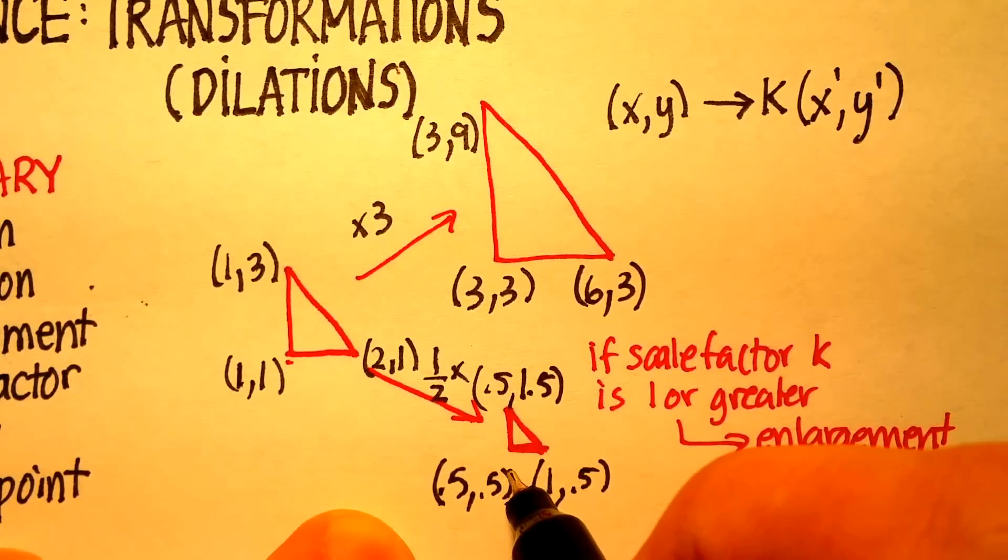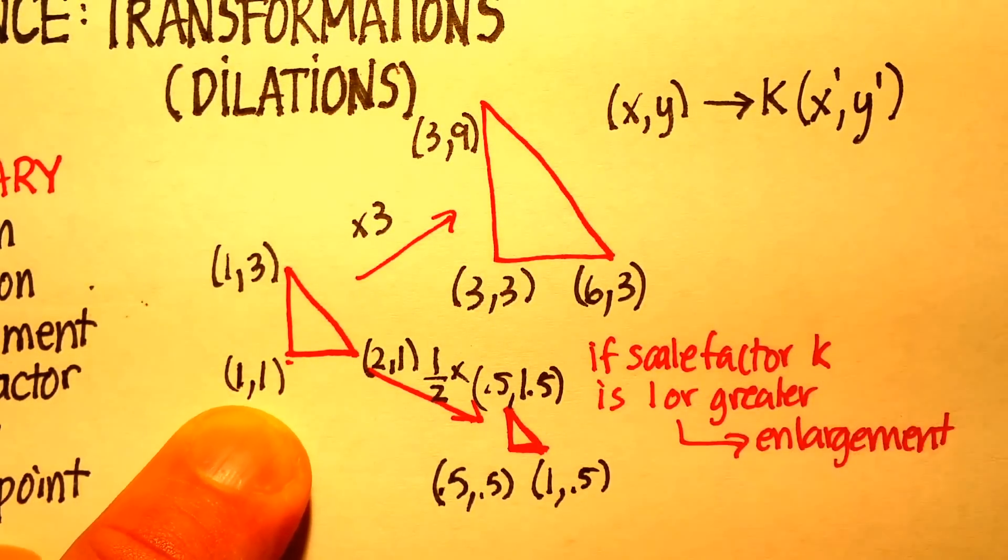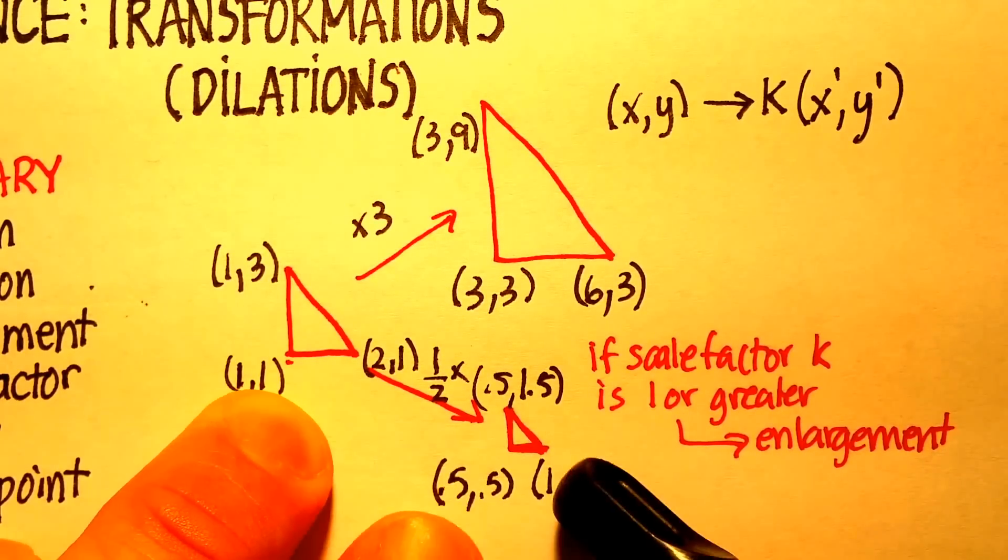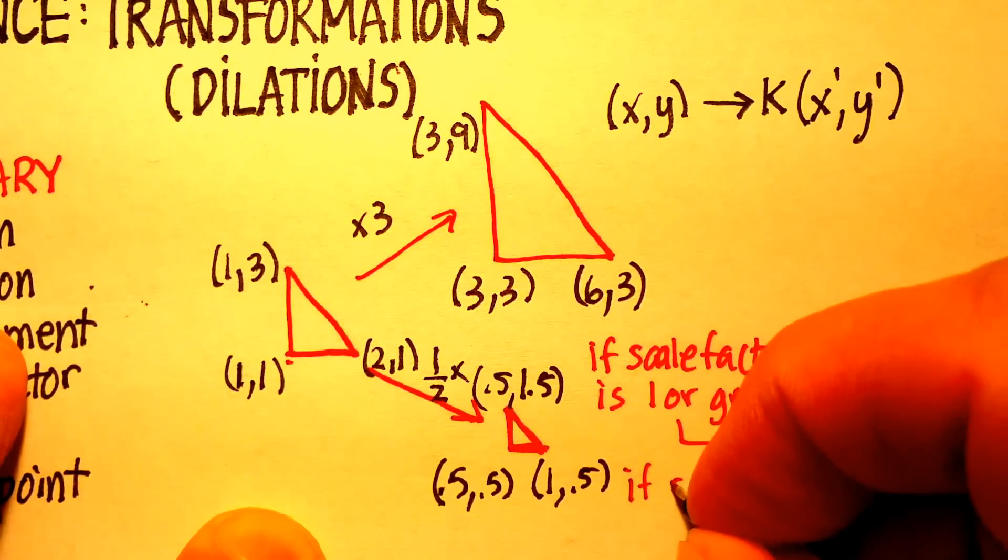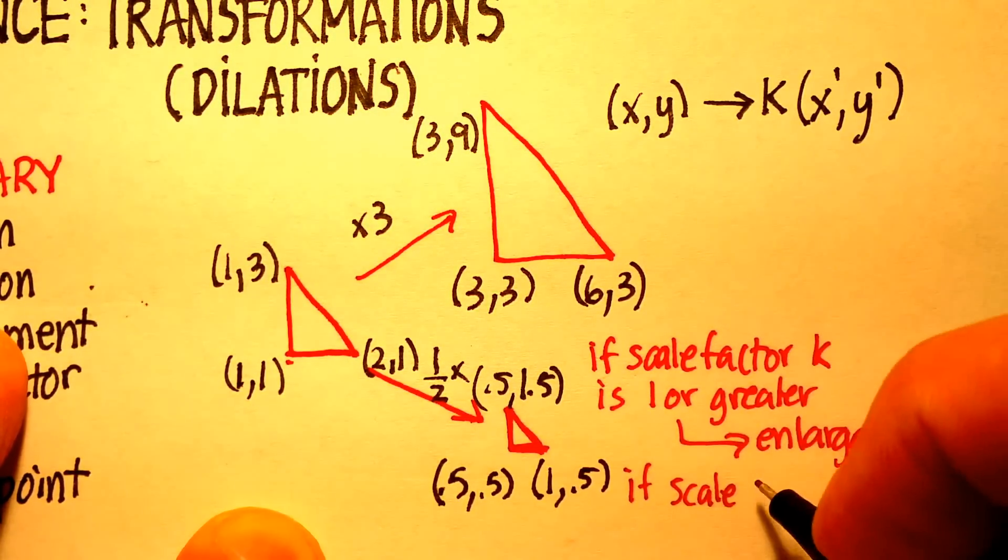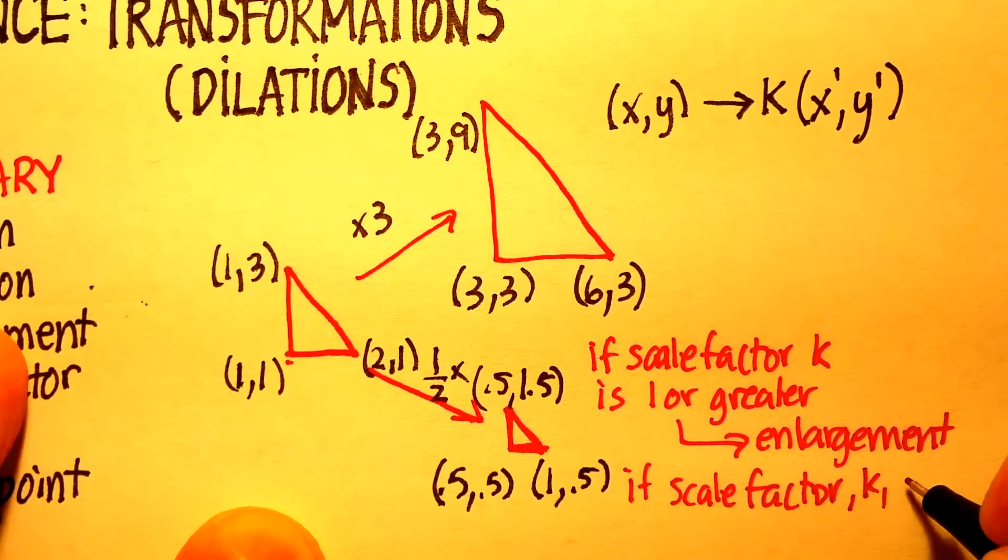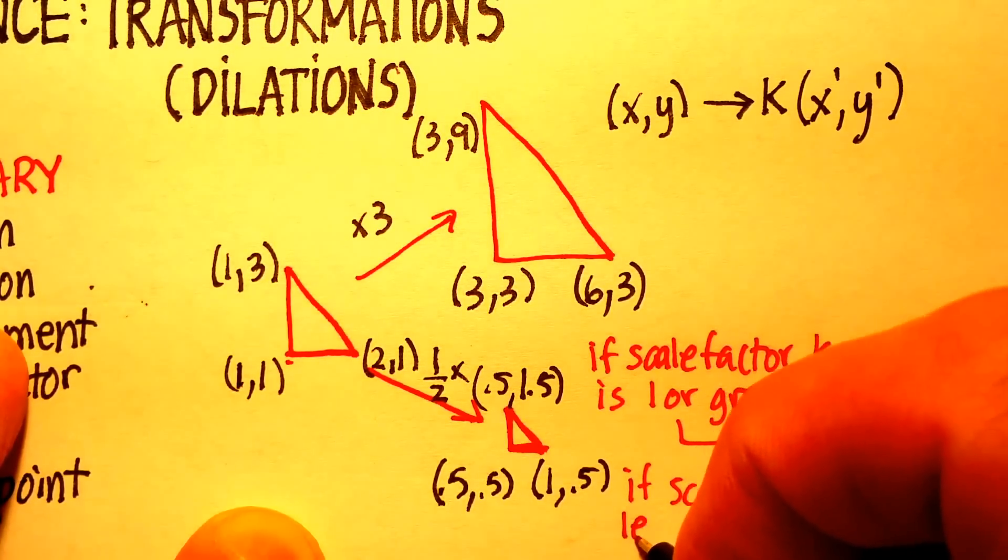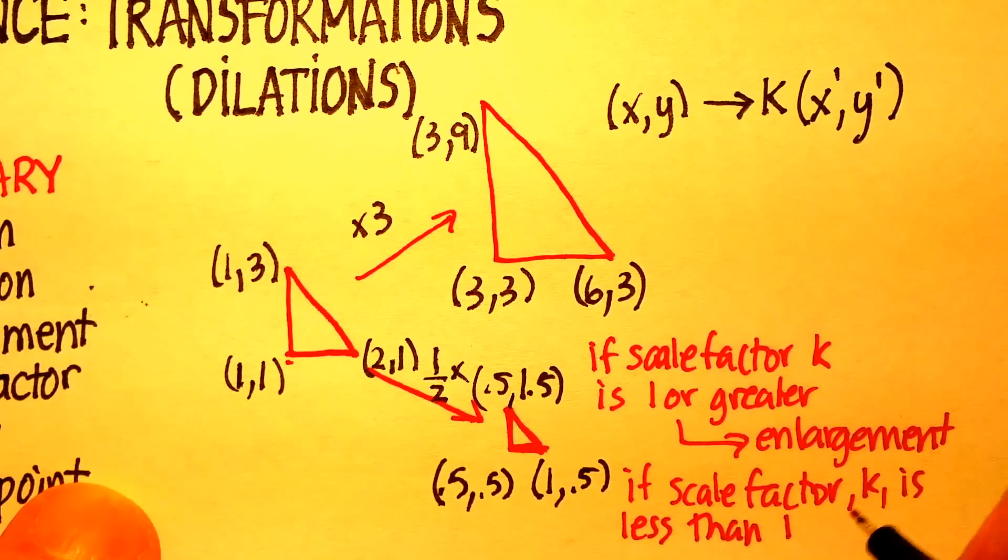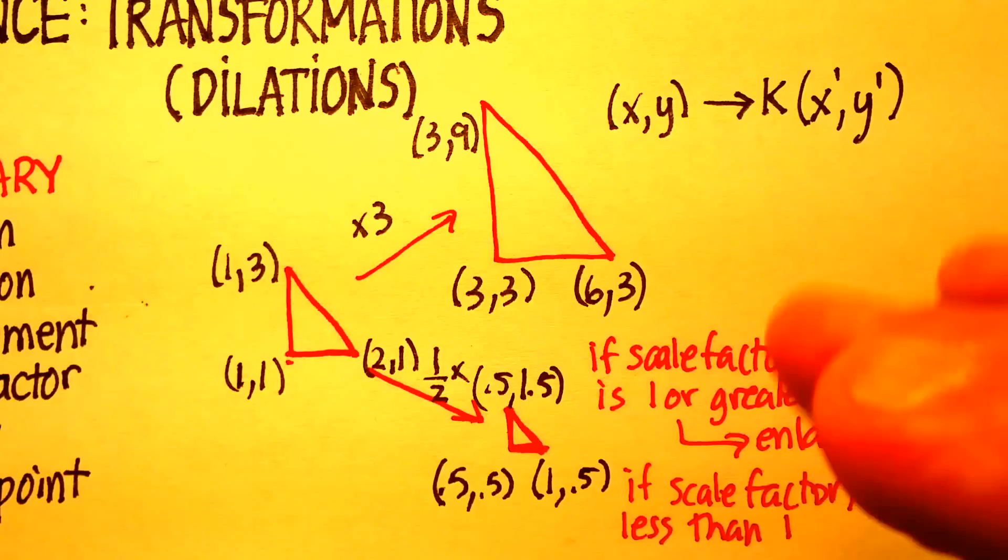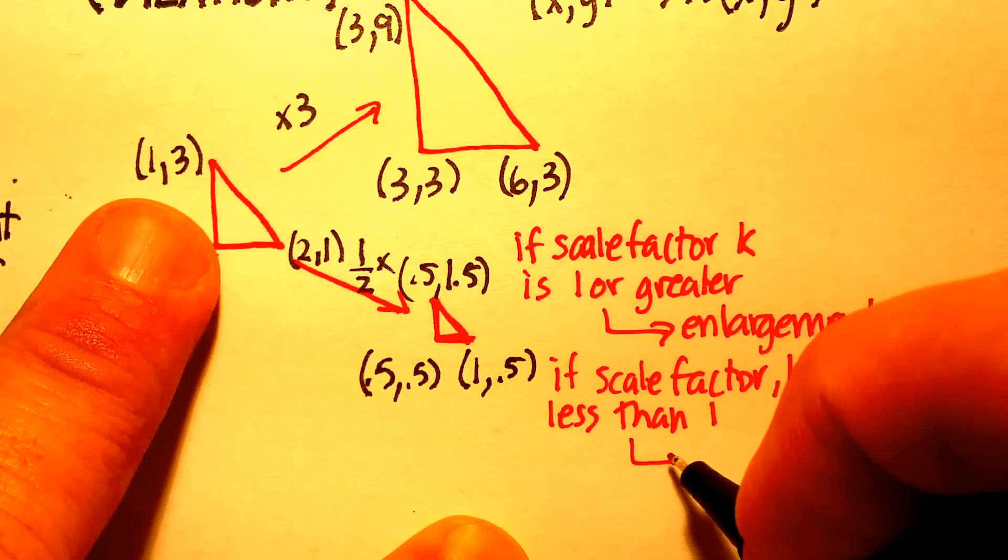This new image with these vertices is similar in proportion, but it is now smaller. It has been reduced. So if scale factor k is less than 1, and it has to go down to 0. If it's anything less than 0, then it doesn't count, and I'll explain that in a different video. Then you basically have a reduction.